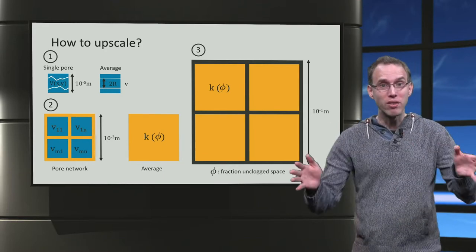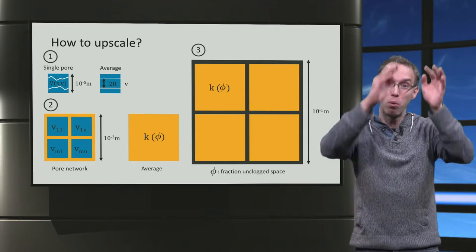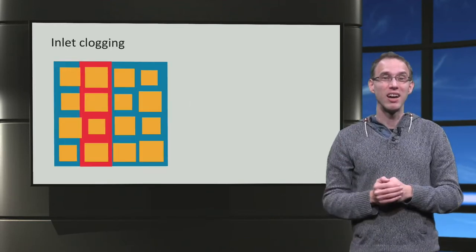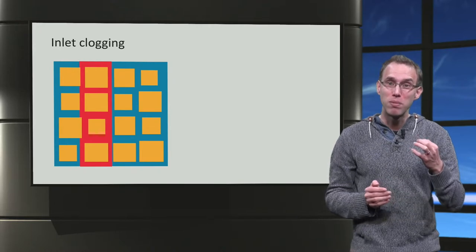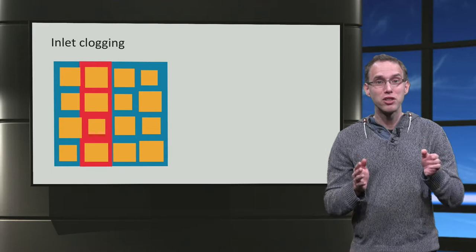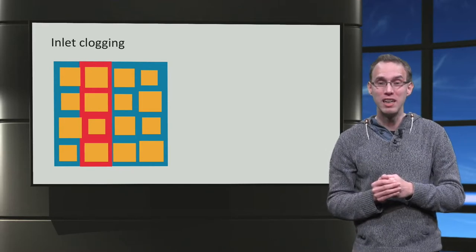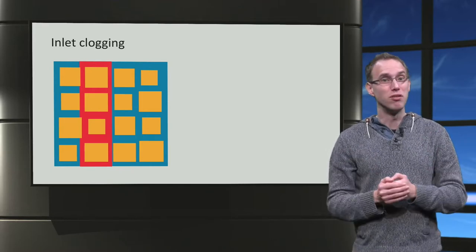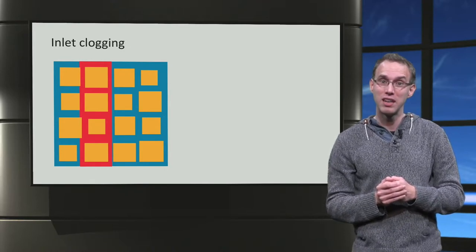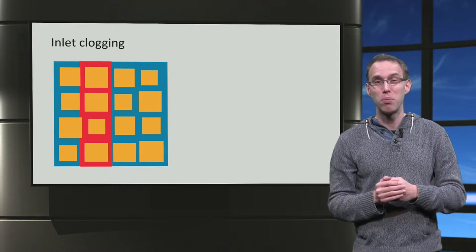In order to block the whole network, it is sufficient to block only one column of pores in 2D. A scenario like this could happen if you supply a lot of nutrients at low flow rates. A very fast growth of biofilm clogs the inlet completely. This leads to a very heterogeneous effective porosity and permeability in the network, and upscaling is very complicated.